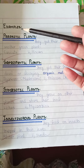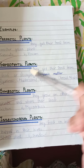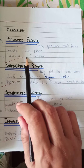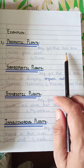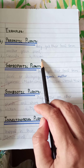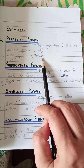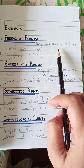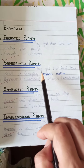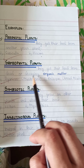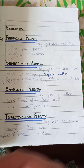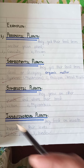Here are the examples. Number one is parasitic plants — they get their food from another green plant, e.g. cuscuta and viscum. Number two is saprophytic plants — they get their food from dead or decaying organic matter, e.g. agaricus, mushrooms, and rhizopus (bread mold).